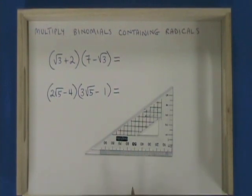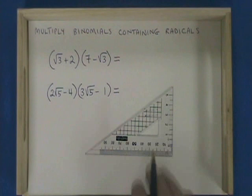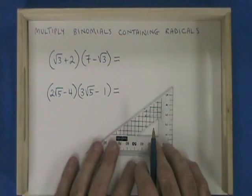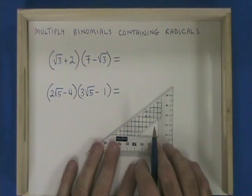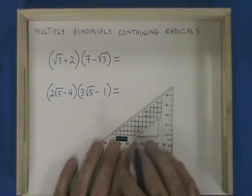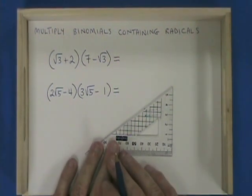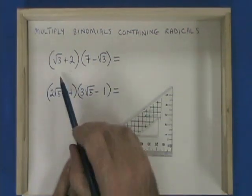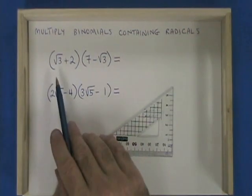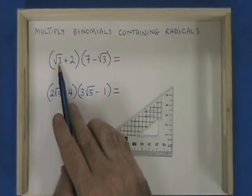This video will illustrate how to multiply binomials that contain radicals. We are doing the FOIL, the same thing that we do when we work with polynomials, and it works just as well when you have radicals.